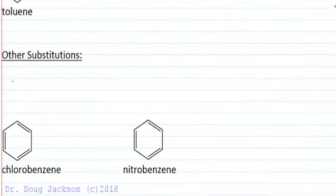Other substitutions such as chlorobenzene, just take the simple name of the group and add benzene at the end, nitrobenzene. So we might have bromobenzene and so forth.